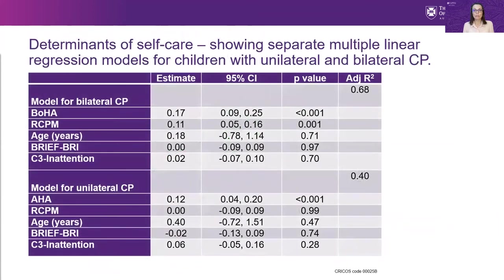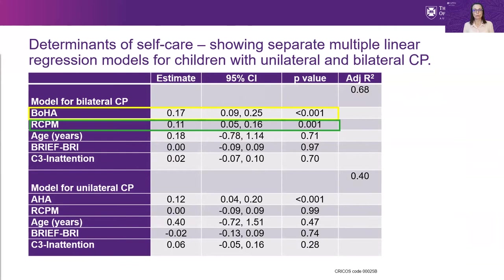In multiple linear regression, separate models were used for children with unilateral and bilateral CP. For children with bilateral CP, the model accounted for 68% of the variance in self-care, and bimanual performance and cognition were the only variables which were significant. For children with unilateral CP, the model accounted for 40% of the variance in self-care, and no other variable apart from bimanual performance was found to be significant.